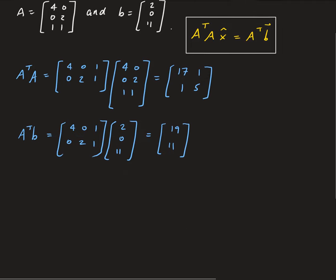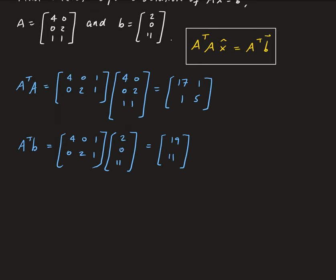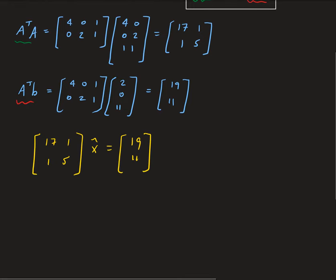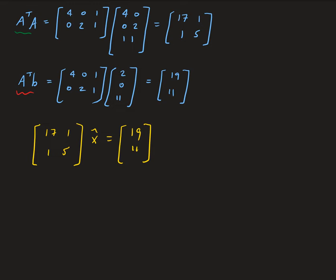So now our system is A transpose A, which gives us the matrix 17, 1, 1, 5, times X hat, equals 19, 11. We can solve this by taking the inverse of this matrix.